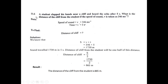Next, Problem 11.6: A student clapped his hands near a cliff and heard the echo after 5 seconds. The student clapped in front of a cliff and heard the echo 5 seconds later. We need to find the distance of the cliff from the student if the speed of sound is 346 meters per second.